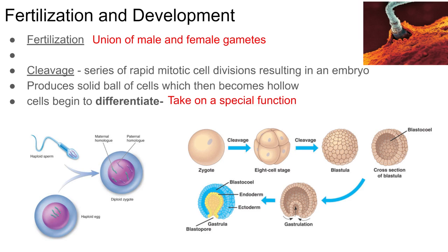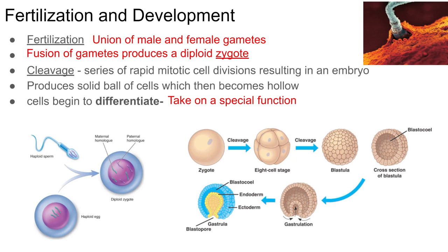Fertilization happens in all organisms that reproduce sexually. In plants, an egg cell has to be fertilized by a sperm cell — that happens in the flowers. Flowering plants also reproduce sexually in a similar way. The sperm cell is haploid — half the number of chromosomes — the egg cell is also haploid, and when they combine we have a full diploid set. That very first cell is called a zygote — a fertilized egg cell.